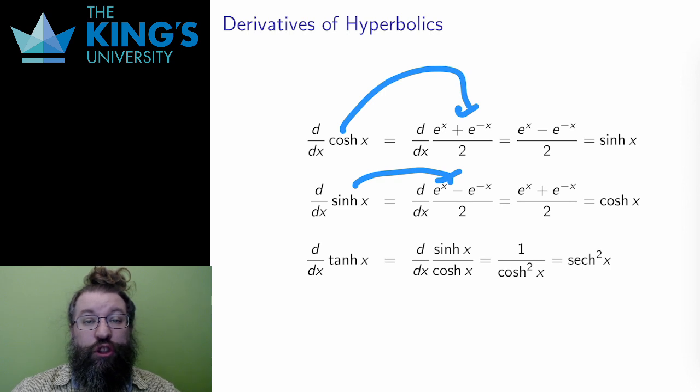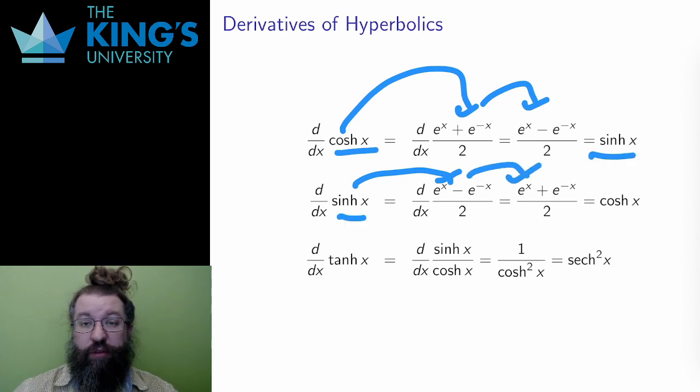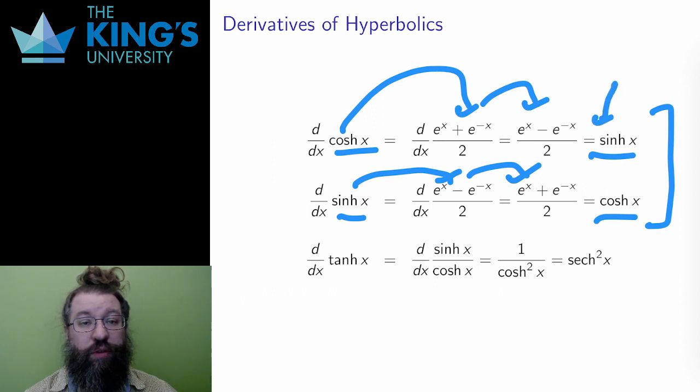Then the first two derivatives here are just done by linearity and the exponential derivative. And it turns out that the derivative of cosh is sinh, and the derivative of sinh is cosh. This is again very similar to trig, but with some sign differences. The sinh derivative is the same, but the cosh derivative is now positive, not negative.